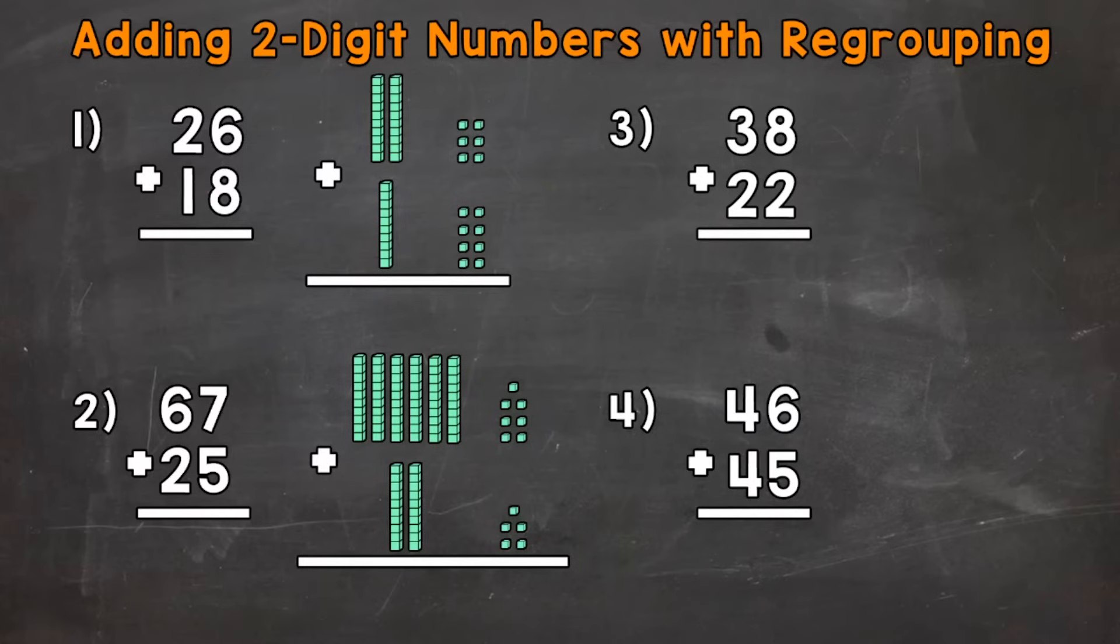So let's jump into number one, where we have 26 plus 18. I have both of those numbers represented by base 10 blocks to the right of the problem. Those base 10 blocks are going to help us visualize exactly what's going on within this problem and give us a better understanding of addition.